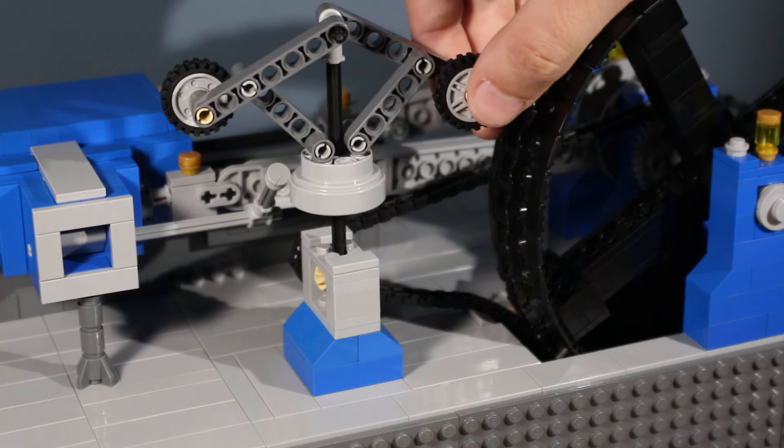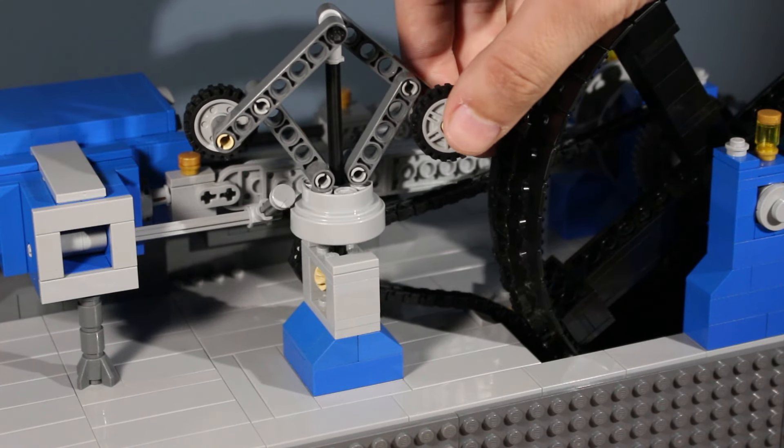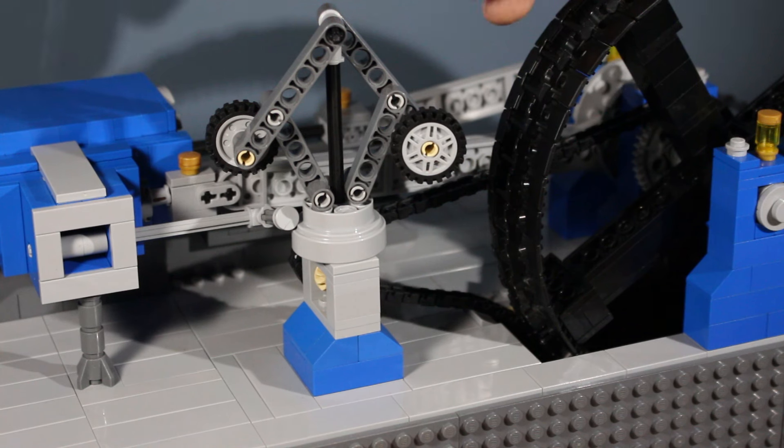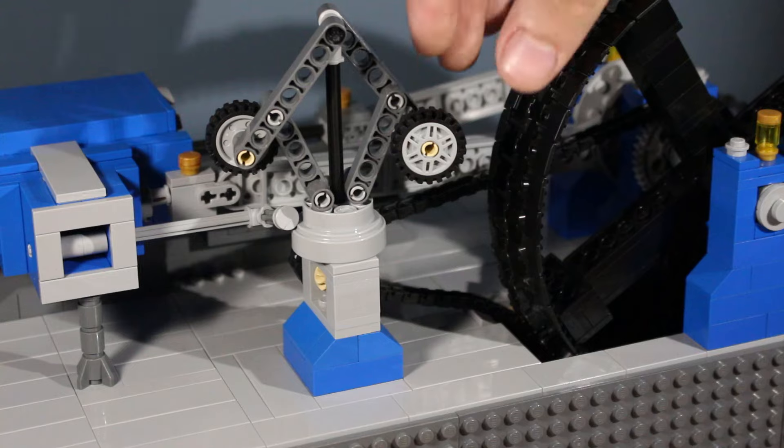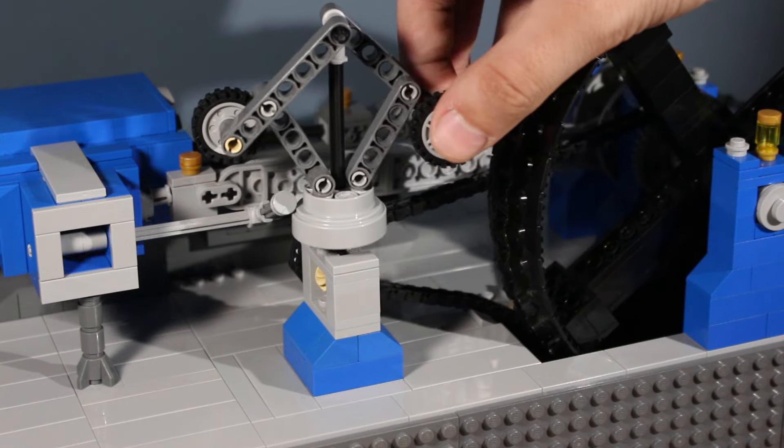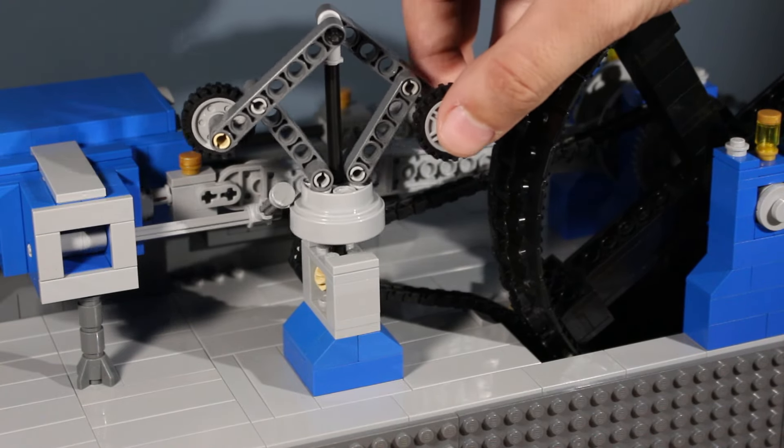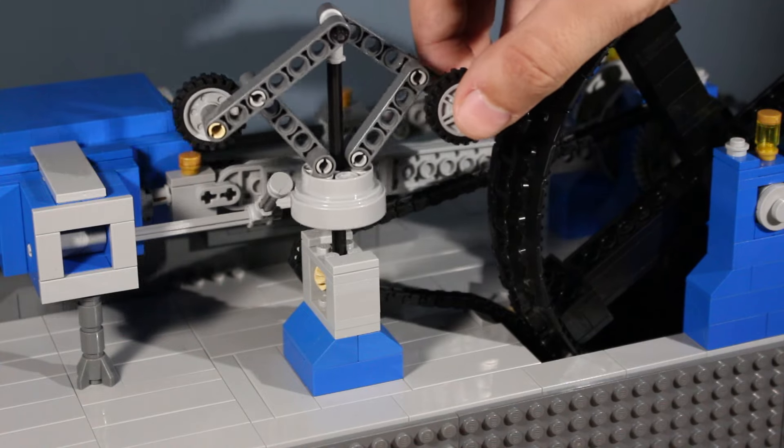Once the engine slows down enough, the weights will fall back in and the valve will slowly open, letting in more steam. As the steam gets let in, the engine will naturally speed up. So the governor is constantly going in and out, in and out, in and out, regulating the speed of the engine.